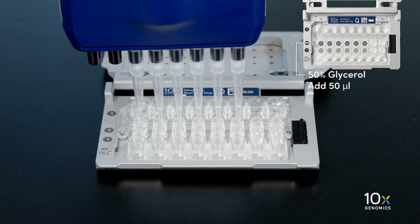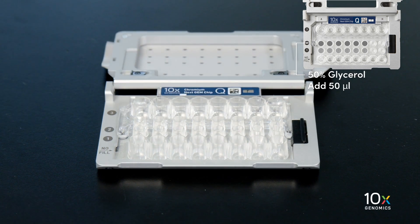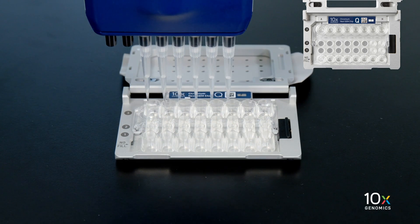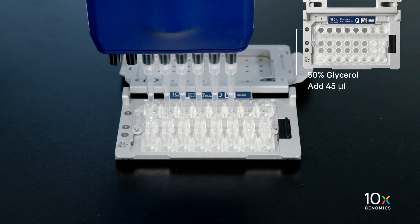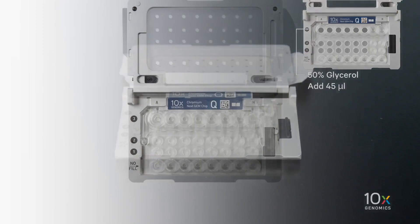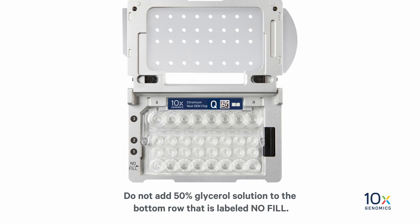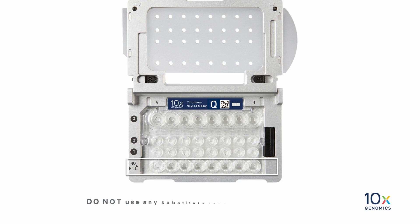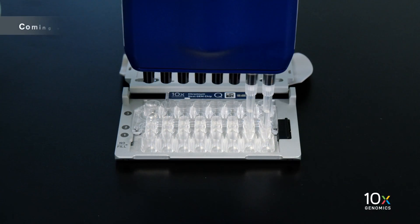Finally we will add 45 microliters of 50% glycerol to the unused wells in the row labeled three. Do not add 50% glycerol solution to the bottom row that is labeled no fill. Do not use any substitute for the 50% glycerol solution. We have completed chip assembly.